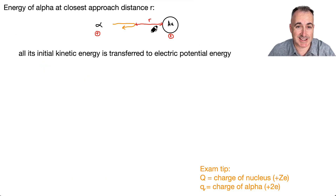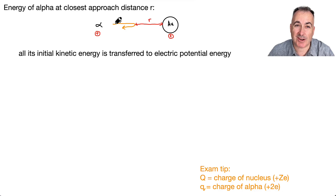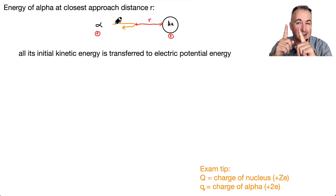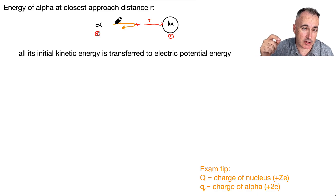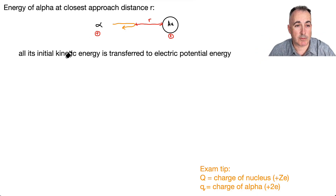How do we find this distance of closest approach? We consider it from energy. This alpha particle has a bunch of kinetic energy when it's initially coming in, and right as it reaches that distance of closest approach — when it's as close as it can get — it has no kinetic energy anymore. That energy has been transferred to electric potential energy. So we set the kinetic energy equal to the electric potential energy: EK equals EP.